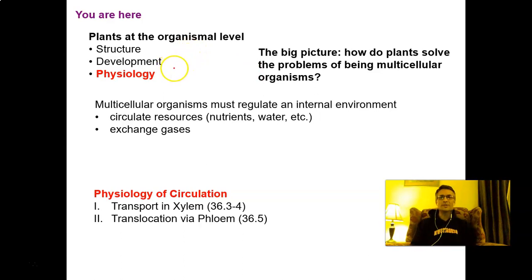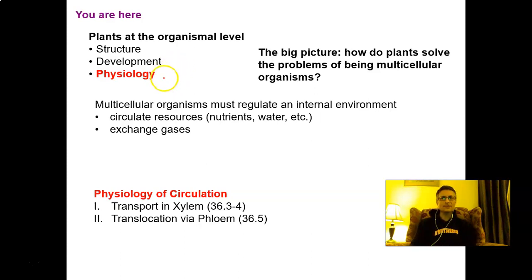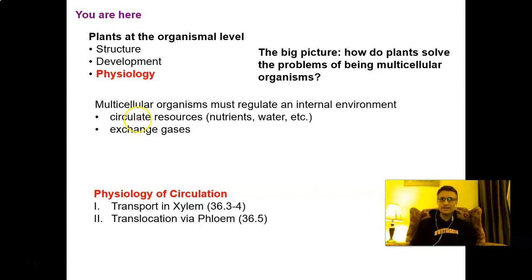At the developmental level, we tended to think about how plants solve the problems of acquiring resources — how they developed and grew to go after resources such as light and water. But now we're going to think about how plants solve the problem of maintaining an internal environment physiologically. As we consider these problems, there are several challenges that all multicellular organisms face, and we'll focus on a couple of really important ones.